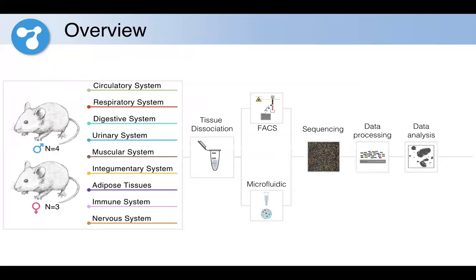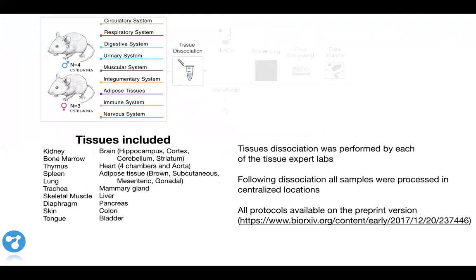What you see here is basically an overview of the study and also an overview of the biggest part of my talk. We involved seven different mice in the study—four male mice and three female mice—and we harvested tissues from these mice in a centralized location and then distributed these tissues to the 15 labs, each of which has its own tissue expertise. You can see a list of the tissues included on the bottom left.